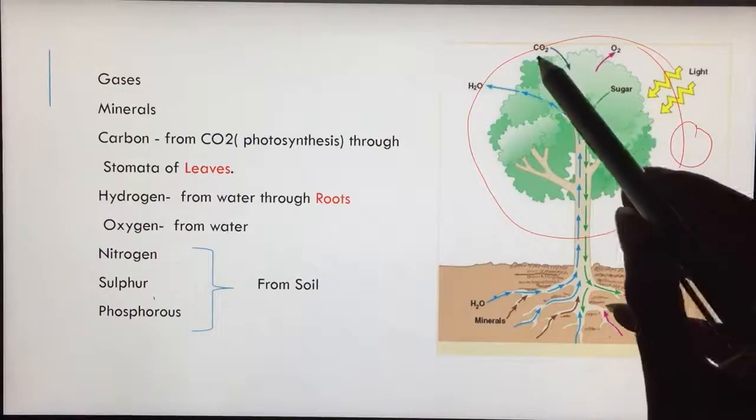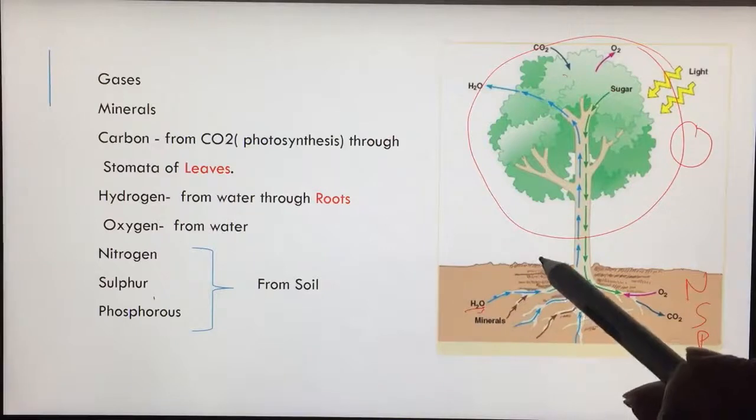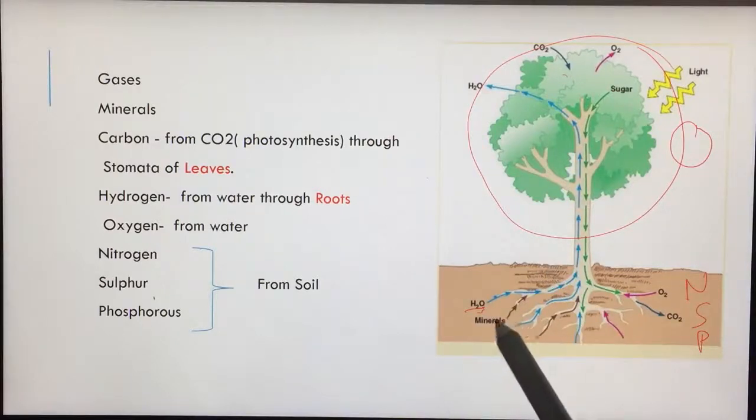Carbon comes from carbon dioxide. Hydrogen comes from water. Oxygen also comes from water that is uptaken by the roots. So these are all the things that the plant needs for cooking.